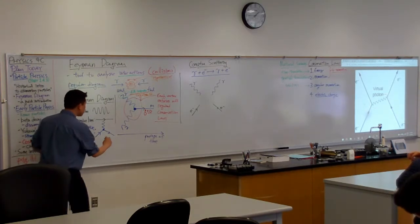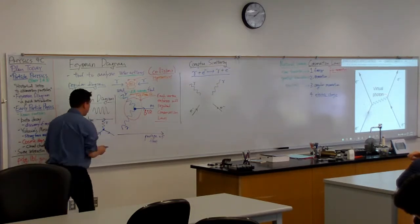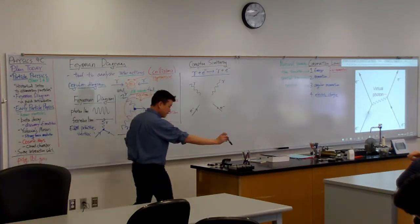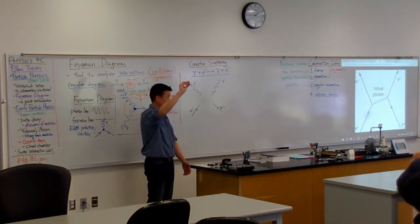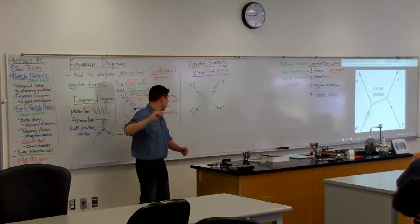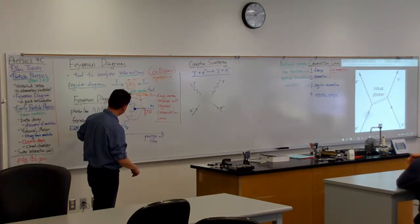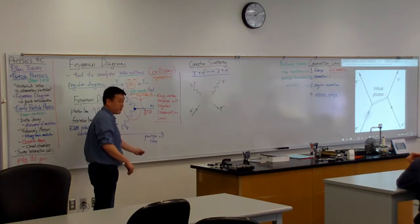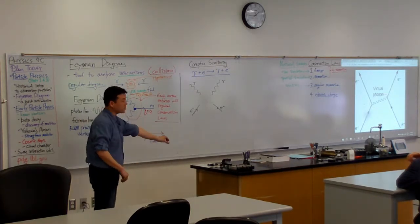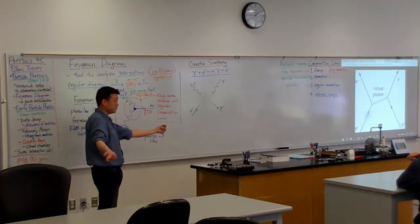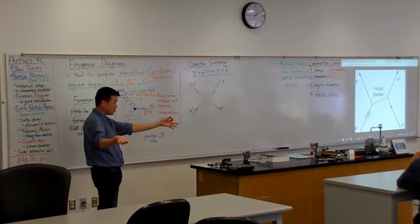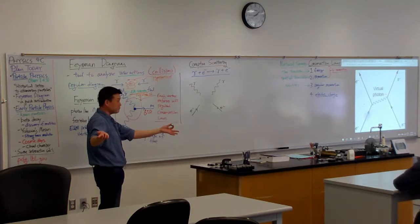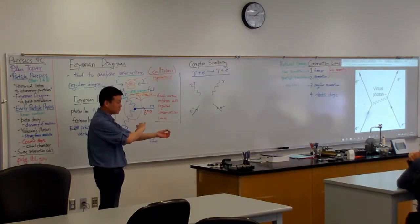So actually there is a kind of an intuitive sense you can make. This is an intuitive sense that you can make. Imagine this is an electron or a charged particle. Suppose it's going in some straight line and then suddenly accelerates and turns the direction. When you have a charged particle that accelerates, what else happens along with that acceleration? Electromagnetic radiation. Electromagnetic radiation, you guys remember that? Accelerating charges emit electromagnetic radiation.